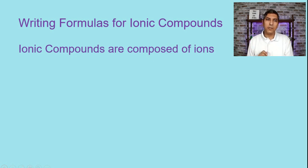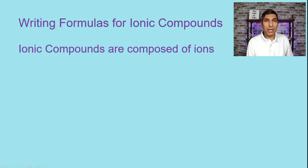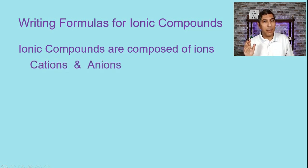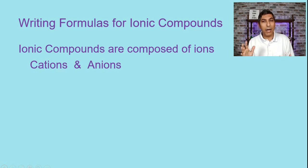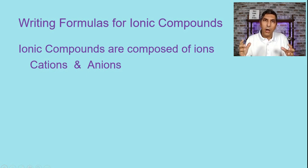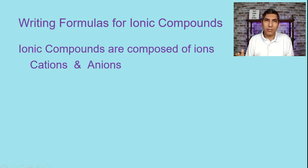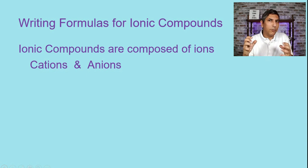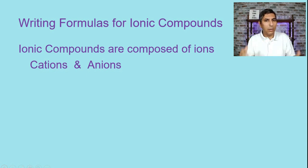we said in an earlier video of this series that ionic compounds are composed of ions. An ionic compound will have a cation and an anion — something that's positively charged and something that's negatively charged. These ionic compounds are going to be held together by what we sometimes call electrostatic attractions. That just means that the positively charged ions are strongly attracted to the negatively charged ions, and they're held together as a compound.